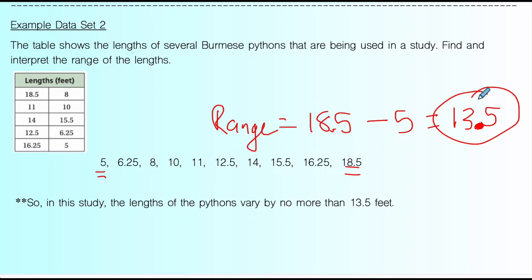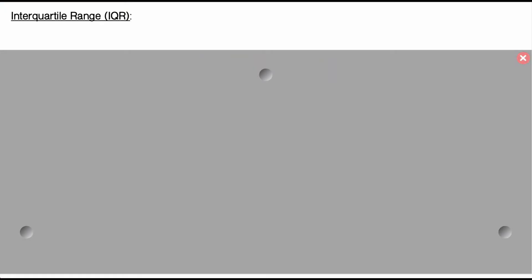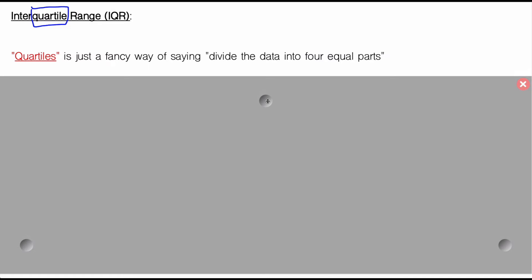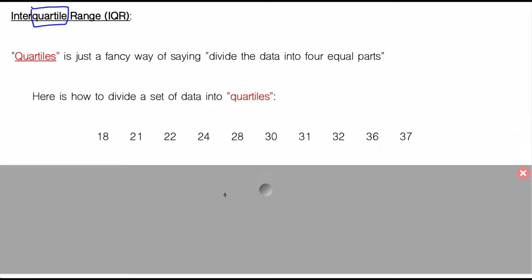That is one way to describe the spread of data. Hold on to your hats, because now we're going to go into the IQR — interquartile range. The name itself sounds fancier, but if you can make sense of the name, you can do this fairly simply. The first thing I'm going to do is focus on one word in particular: quartile. Quartile is just a fancy way of saying take your data and divide it into four parts. Quart, quartile, fourths.